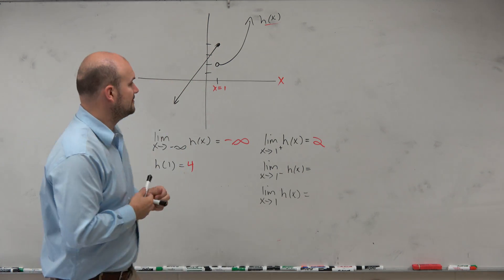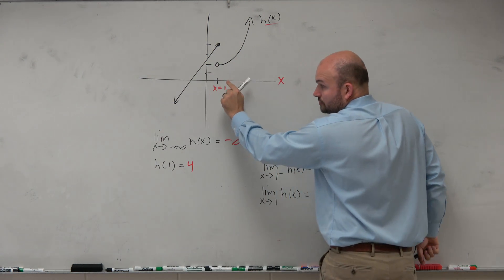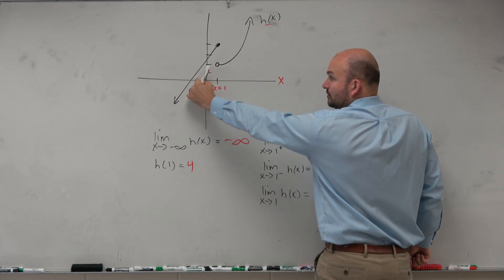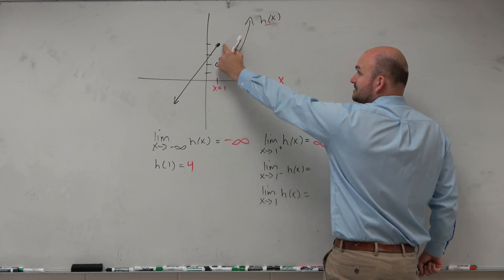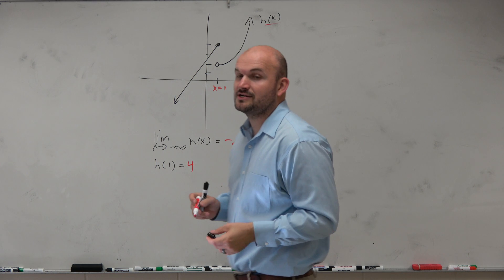Now let's do it from the left. So from the left hand, as we get closer and closer to 1, what value we're getting closer and closer to is 4. All right, now, actually, I want to tell you guys a story.